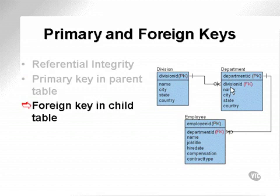The foreign key is in the child table. To summarize: the primary key is in the parent table — division ID, department ID, employee ID. The foreign key is in the child table — division ID and department ID.